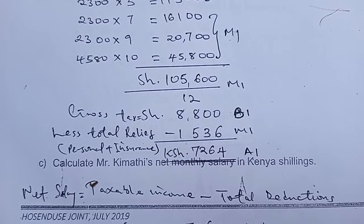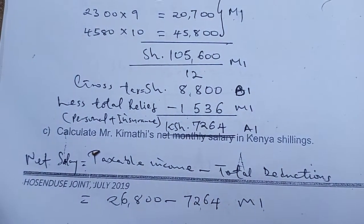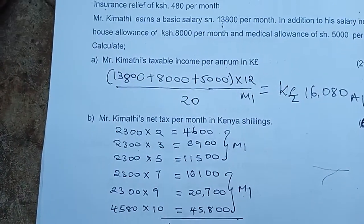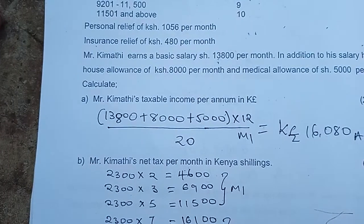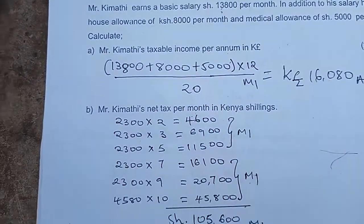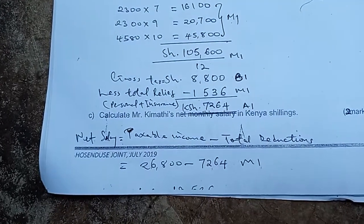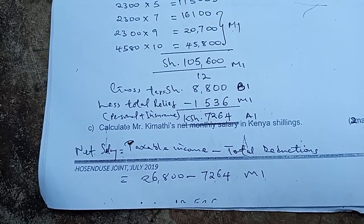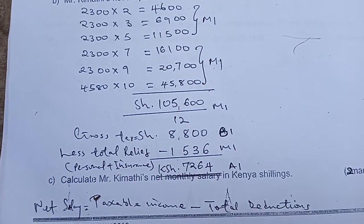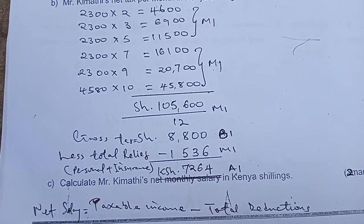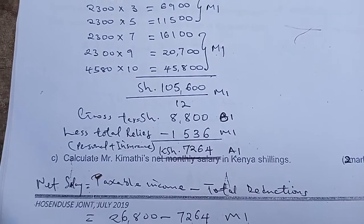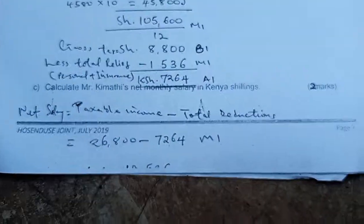For Part C, we calculate Mr. Kimati's net salary in Kenya shillings. We take the taxable income by adding 13,800 plus 8,000 plus 5,000, then subtract the total deductions, which is the net tax, to get the final net salary.